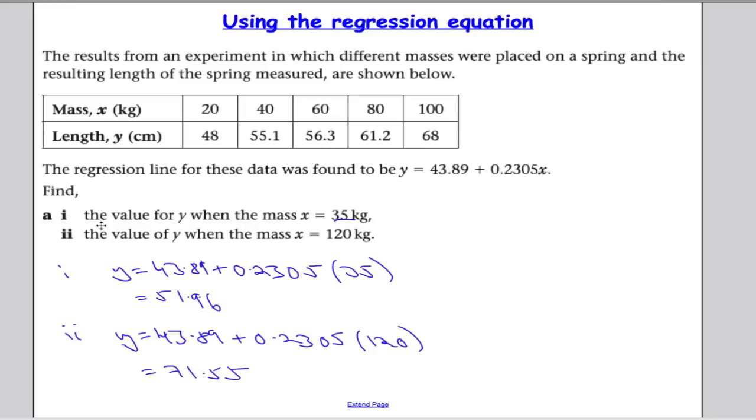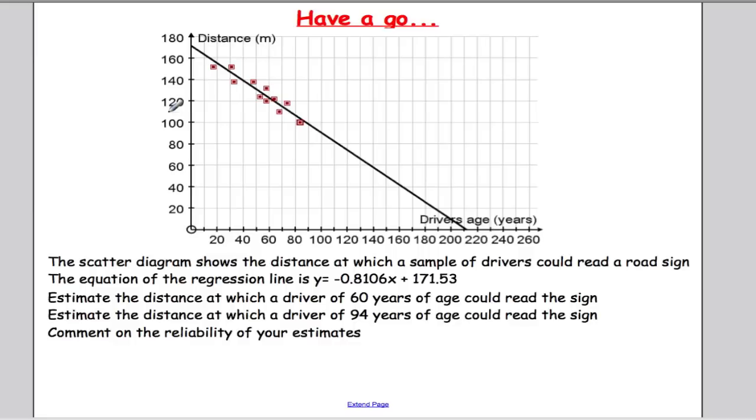Now, suppose I was asked to comment on the reliability of my estimates. I would say this one here is very reliable because it's within the range of data. This one here is not reliable because it's outside the range of data. You can see within the experiment we only measured from 20 up as far as 100. So anything above 100 is risky to use. Anything below 20 would also be risky to use. Okay, that's the example done.